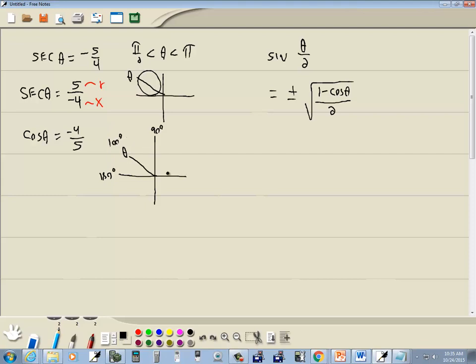A hundred divided by 2 is 50 which would fall over here. So this is where theta over 2 falls. I pick a simple number example just to wrap my mind around that. Now we're talking about sine and in this quadrant sine is positive so we're going to keep the positive version of it.